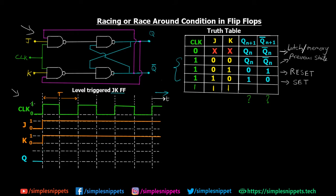When the clock is 1, J is 1 and K is 1. Let's assume Q was initially 0. This Q is fed back to K via the pink feedback line. So we have inputs 1, 1, and 0 at the NAND gate — since any input is 0 in a NAND gate, the output is always going to be high, so this output is going to be 1.